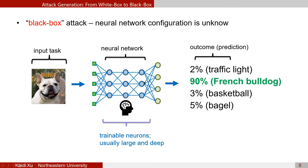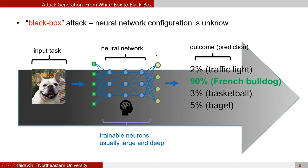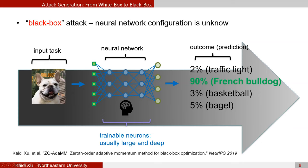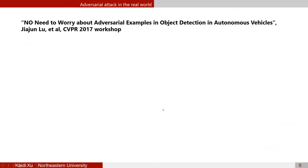In the real world, the white-box setting may not be realistic. In the black-box setting, the neural network configuration is unknown, and all we can do is query the model — feeding different inputs and observing outputs. The attack problem can then be converted to a zeroth-order optimization problem, and we can still perform adversarial attacks using gradient estimation in the zeroth-order setting.